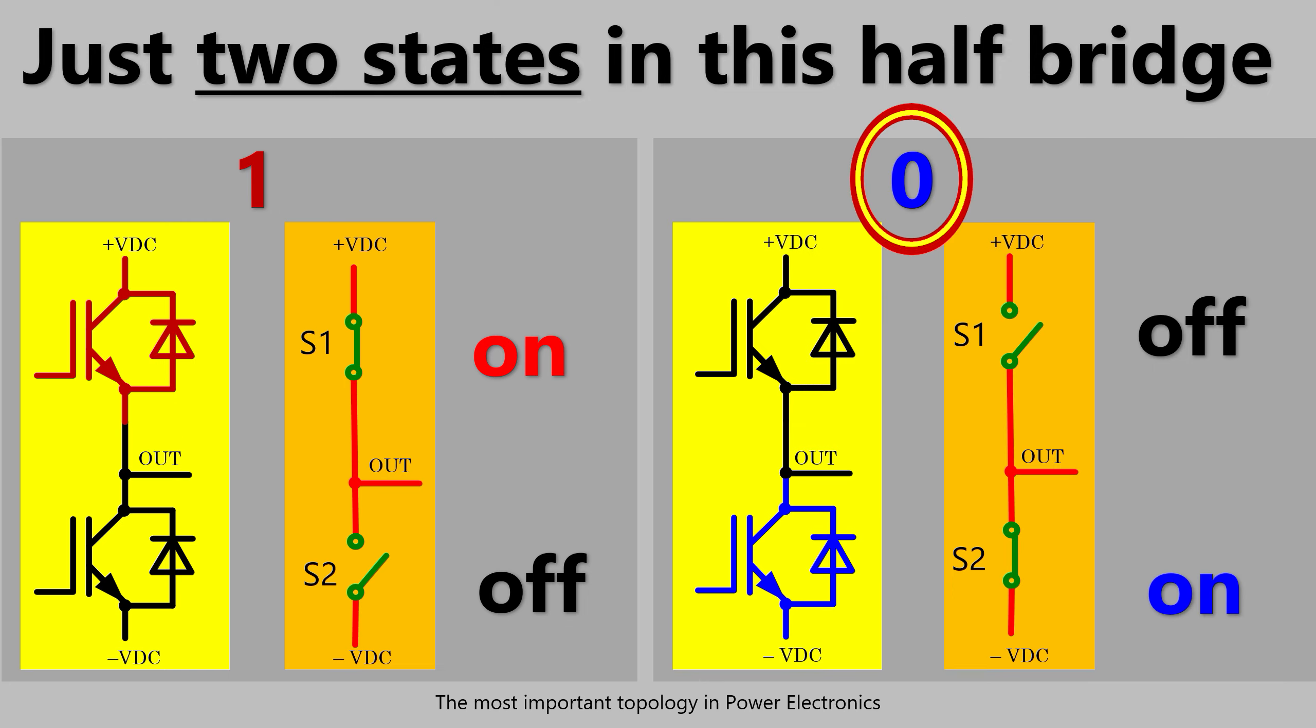State 0, the lower switch is closed, the upper switch is open. State 0 makes the out potential minus VDC. There are no in-between potentials for out. Out is either plus VDC or minus VDC. End of story. Well, almost.